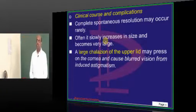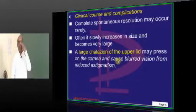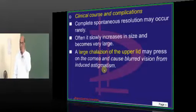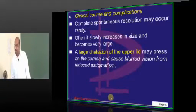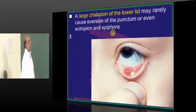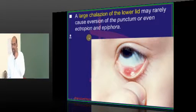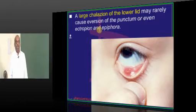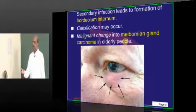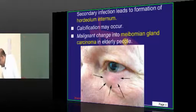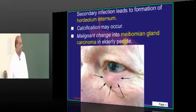What are the important complications of external hordeolum? If it is very large on the upper eyelid, it can make pressure on the cornea, and ultimately the cornea can develop irregularities — astigmatism can be a consequence. If it is on the lower eyelid, it can drag the lower eyelid down, and epiphora — continuous tears — can be an issue. It can also lead to ectropion in the long run. If external hordeolum gets secondarily infected, then you call it internal hordeolum.